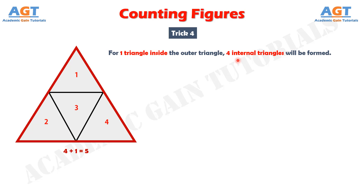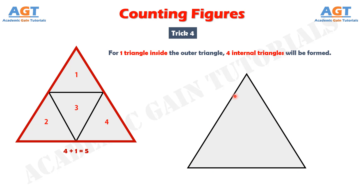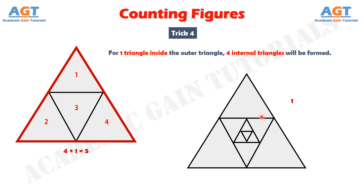Let's practice an example. We have an outer triangle, inside it there is another triangle, inside that there is another, and inside that there is yet another. How many triangles are in this figure? The outer triangle counts as 1. For the first inside triangle there will be 4, for the second inside triangle there will be 4, and for the third inside triangle there will also be 4. Adding them: 1 plus 4 plus 4 plus 4 equals 13 triangles total in this figure.